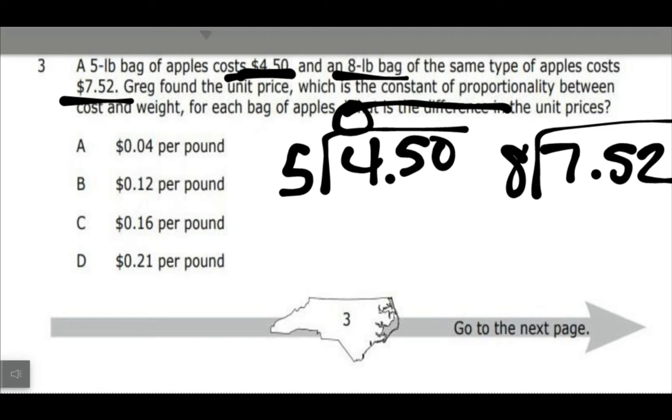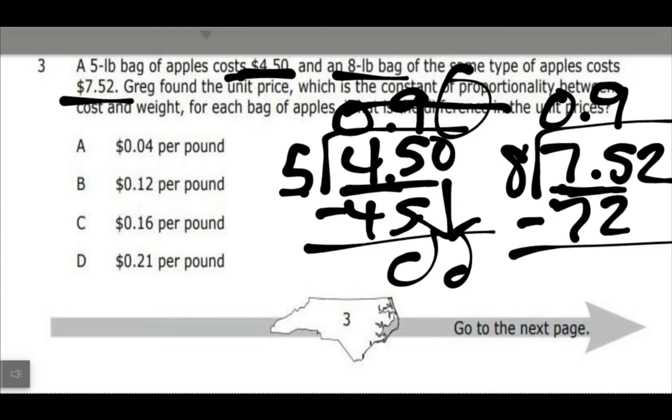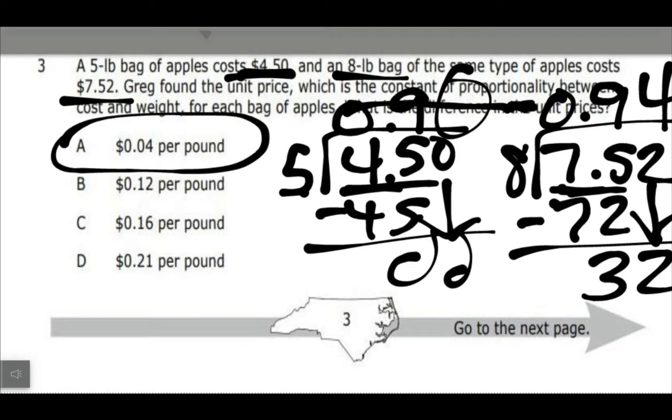So I obviously have to figure out both of them. Five does not go into four here, so I put a zero. Five goes into 45 nine times, yeah, that'd be 45. Then just get a zero, so really that's 90 cents. So that means for every pound it's 90 cents. That's the unit rate for the first one, and then the eight pound bag, it doesn't go into seven. Eight goes into 75 nine times, that's 72. 75 minus 72 is three, and then bring down my two, so now I have 32. Eight goes into 32 four times. So we have 90 cents and 94 cents, so the difference between those would be four cents. So my answer would be A.